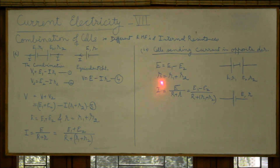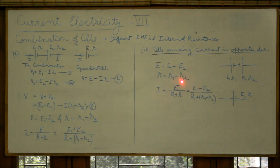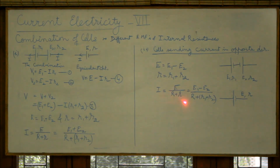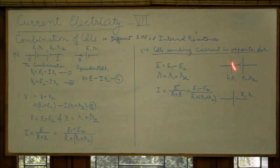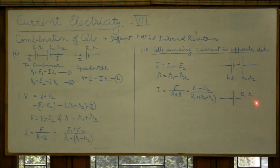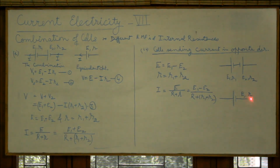The total internal resistance is still r₁ + r₂, so the current will be (e₁ − e₂)/(R + r₁ + r₂). This is the equivalent circuit for this opposing combination: capital E = e₁ − e₂ and small r = r₁ + r₂.